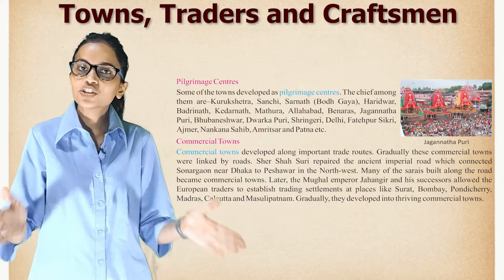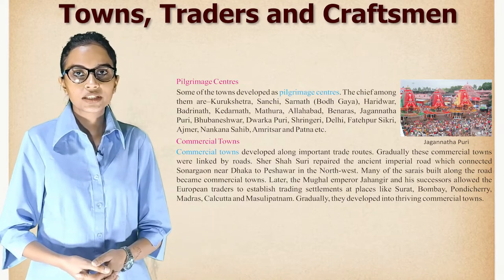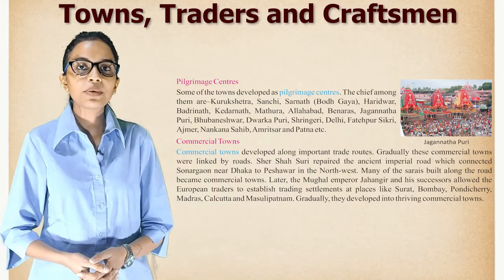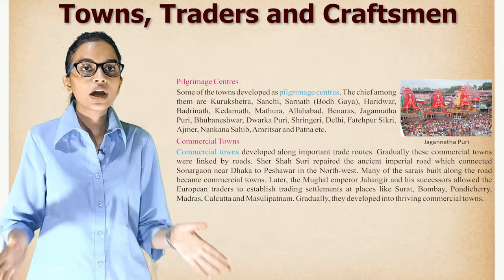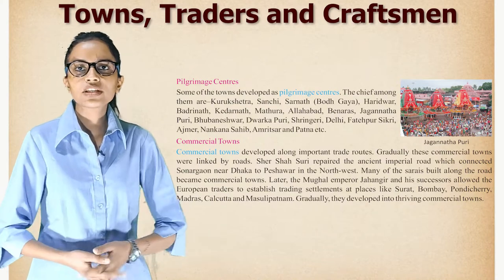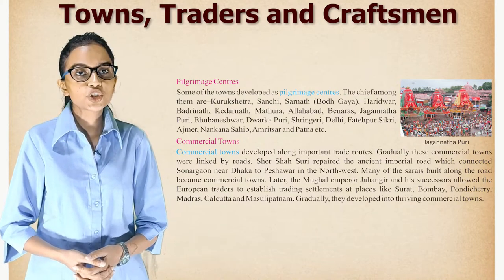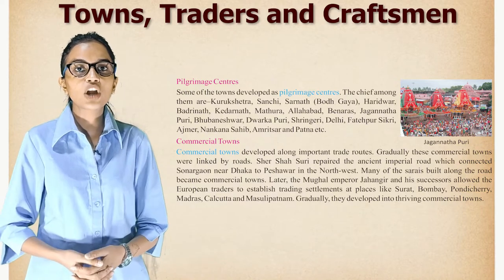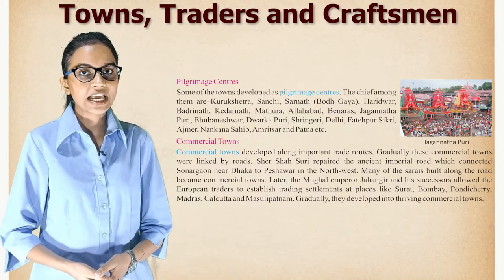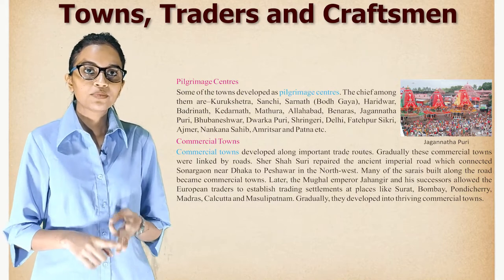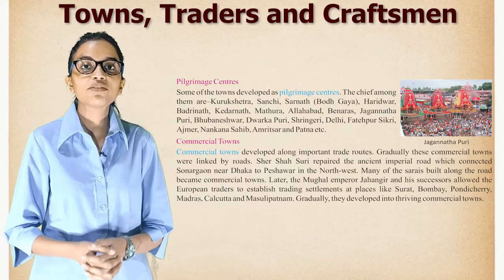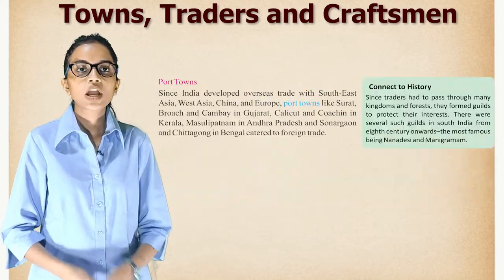Commercial towns developed along important trade routes. Sher Shah Suri repaired the ancient imperial road which connected Sonargaon near Dhaka to Peshawar in the northwest. Many of the sarais built along the road became commercial towns. Later, the Mughal Emperor Jahangir and his successors allowed European traders to establish trading settlements at places like Surat, Bombay, Pondicherry, Madras, Calcutta, and Masulipatnam, which gradually developed into thriving commercial towns.